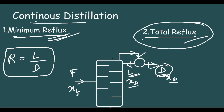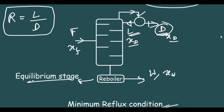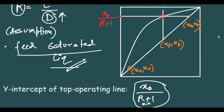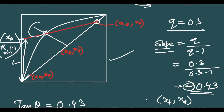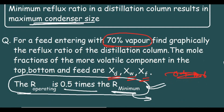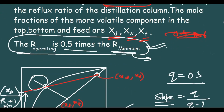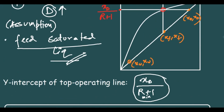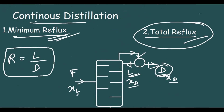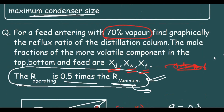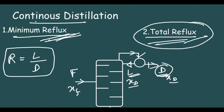This is all about continuous distillation. I have made two more videos on this topic: the first on the feed line and how to construct it, the second on how to construct the stages. This is the third video showing how to differentiate between the minimum reflux condition and the total reflux condition. Thank you.